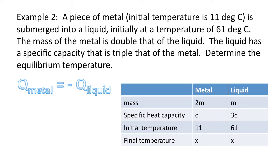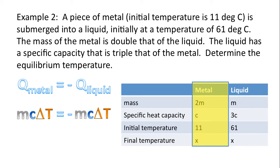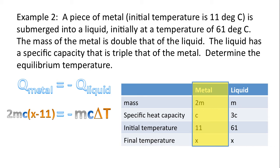The metal is going to gain energy because it will get warmer; the liquid will lose energy to the metal because it will get cooler. This equation is a statement of energy conservation — no energy is lost to the environment. Using Q equals mc delta T for the metal, we substitute 2m for mass, C for specific heat capacity, and X minus 11 for the change in temperature, giving us the metal side of the equation.